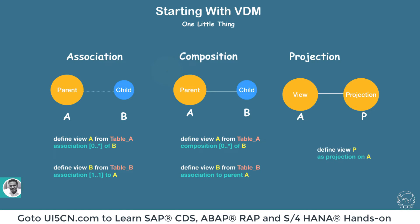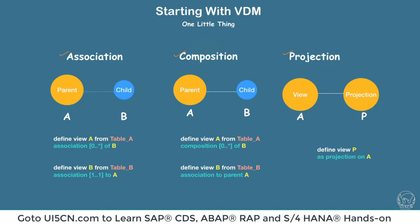In this section, we will be talking about association, composition, and projection. Association and composition we have seen a lot in CDS views, and if you go to the CDS professional development course, we have extensively used them. In many CDS views you will find their usage.